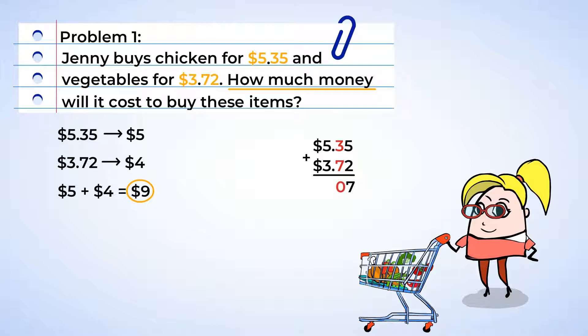And now for the 1s, 5 plus 3 is 8, plus the carried over 1 is 9. And great job! Last step is to make sure the decimal is placed. $9.07. Hey, that's really close to our estimate of $9. Great job!